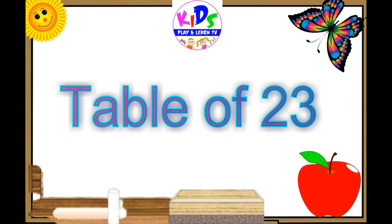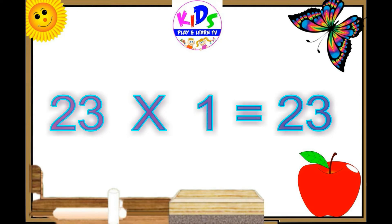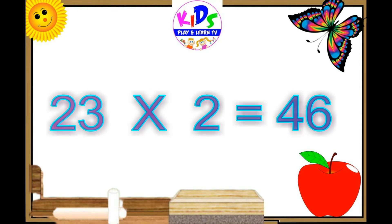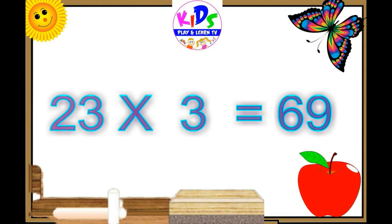Now, we will learn table of 23. 23 1s are 23, 23 2s are 46, 23 3s are 69.